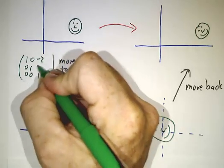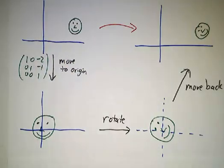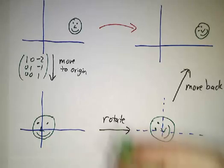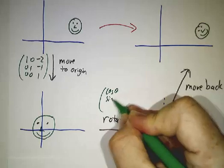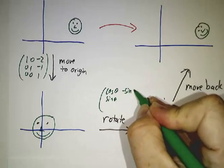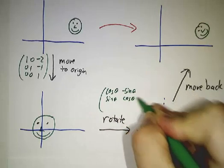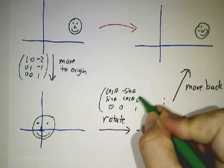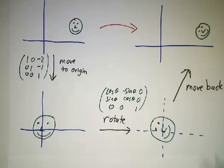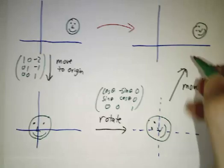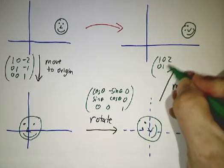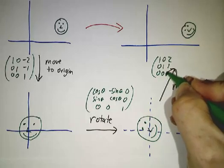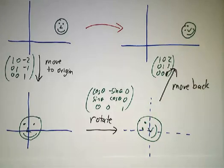So how do you move it to the origin? Well, you have to move by (-2,-1). How do you rotate? You get the matrix [[cos θ, sin θ], [−sin θ, cos θ]] padded with zeros and a 1. And how do you move from the origin to the point (2,1) with that matrix?